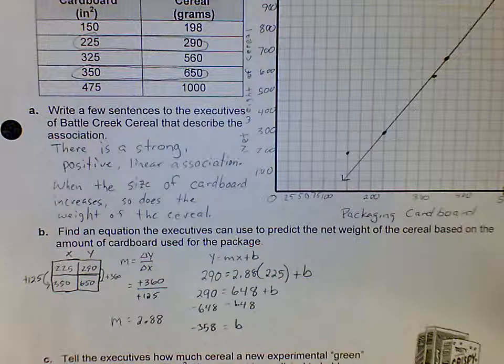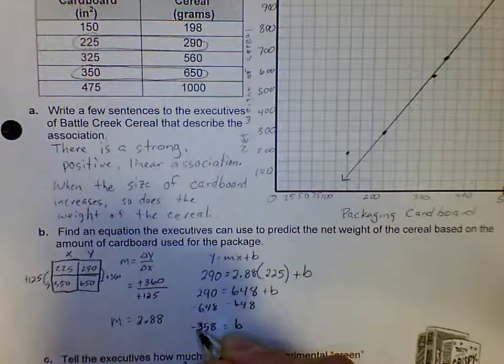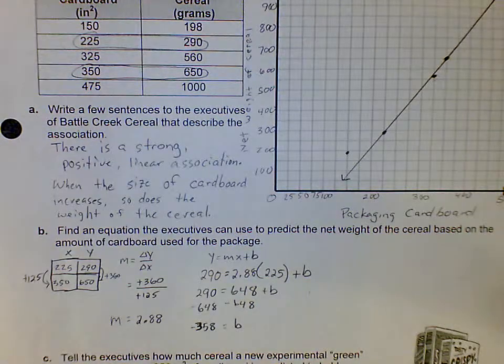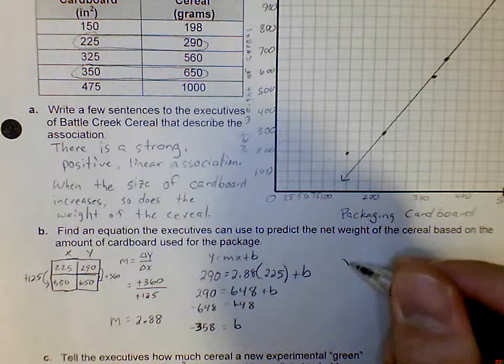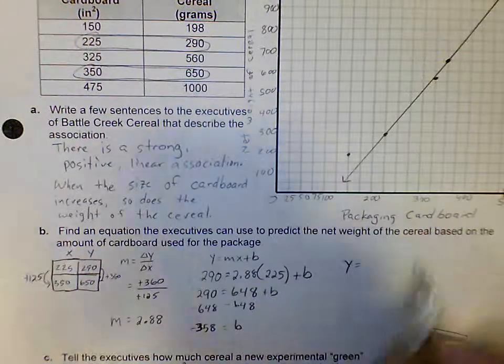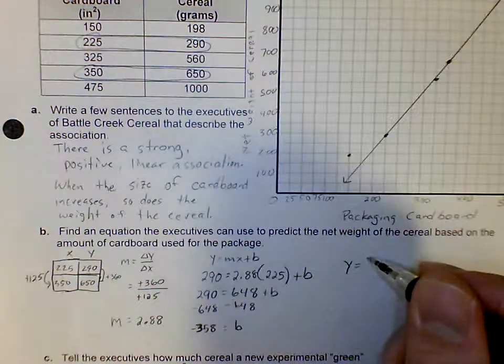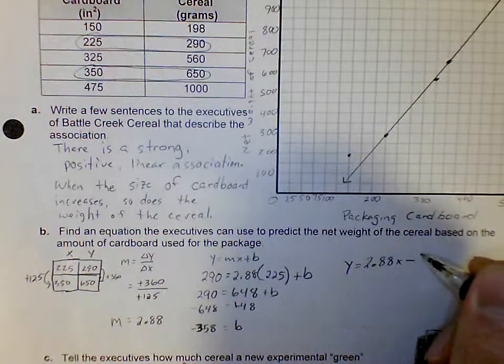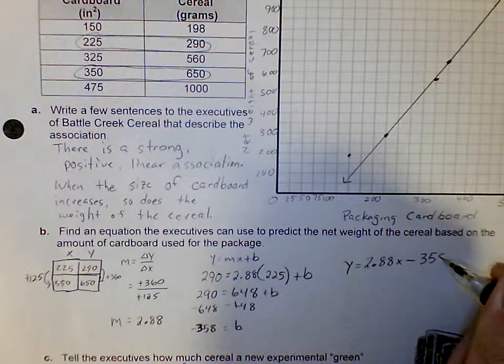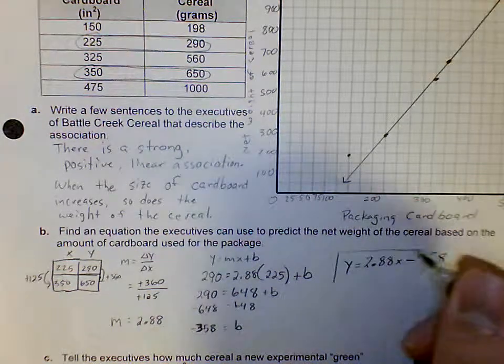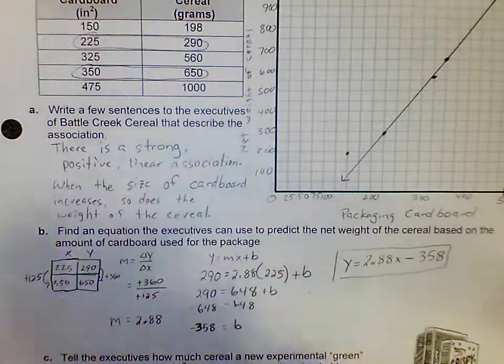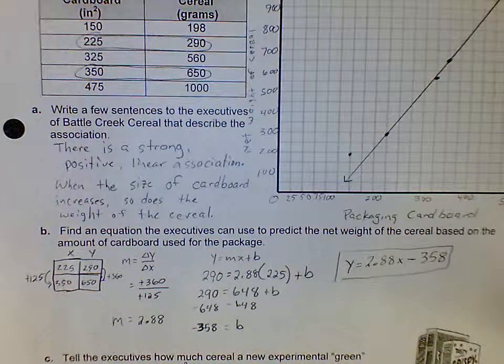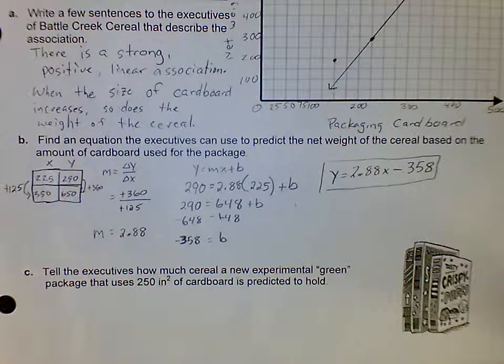Now that I know what my slope is, now that I know what my y-intercept is, I can write my equation. The equation is going to be y equals my slope, 2.88, and then subtract your y-intercept which is 358. So that is my equation for the line of best fit.